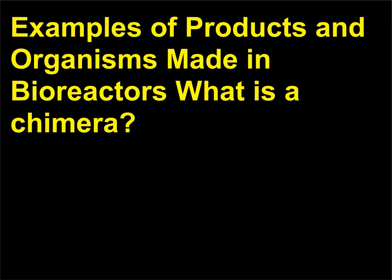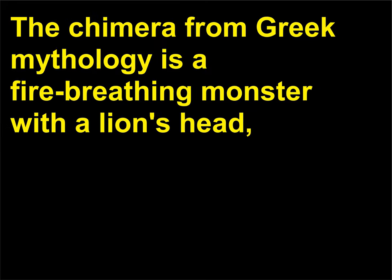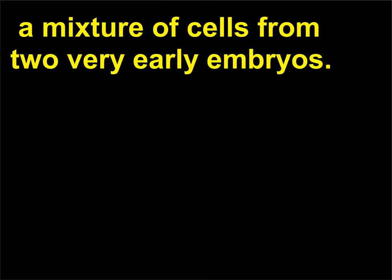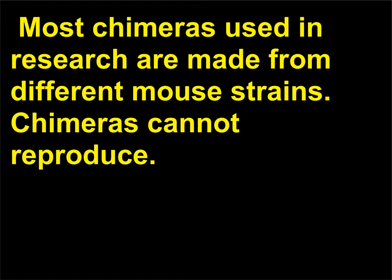Examples of products and organisms made in bioreactors: The chimera from Greek mythology is a fire-breathing monster with a lion's head, goat's body, and a serpent's tail. The chimera of biotechnology is an animal formed from two different species or strains — that is, a mixture of cells from two very early embryos. Most chimeras used in research are made from different mouse strains. Chimeras cannot reproduce.